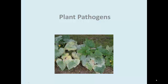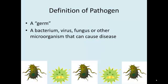Plant pathogens. The definition of a pathogen is basically what we would call a germ — wash your hands, you might have germs on them. These include quite a few different kinds of microorganisms, like bacteria, fungi, and viruses.